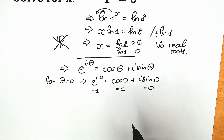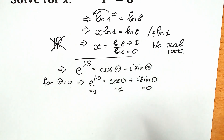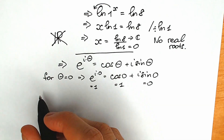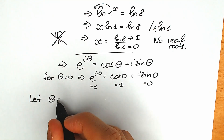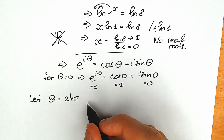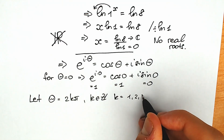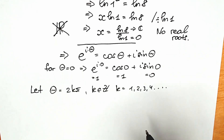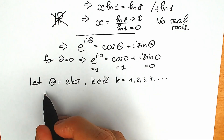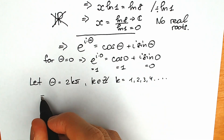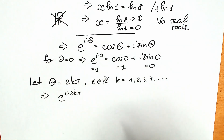Now let me show you how to solve our question 1^x = 8. I'll use an interesting substitution: let theta equal to 2kπ, where k is an integer — so k equals one, two, three, four, and so on. Instead of theta, we plug in 2kπ into Euler's identity. As a result we have e to the power i times 2kπ equal to cosine 2kπ plus i sine 2kπ.